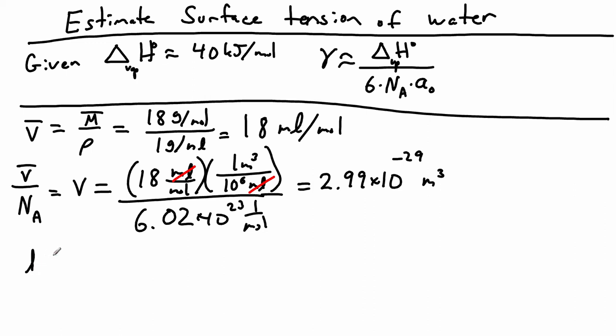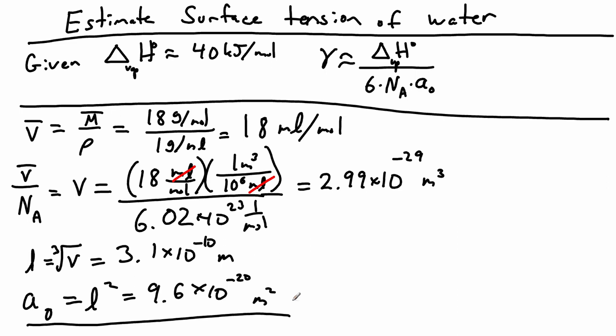We're modeling this as a cube, so we know that L is just going to be the cube root of volume. We take the cube root of this and that's 3.1 times 10 to the negative 10 meters. And of course, the area of the face of the cube is just equal to the length squared. So this comes out to 9.6 times 10 to the negative 20 meters squared. So we've got our a_naught, we've got everything else, let's just go ahead and plug it in.